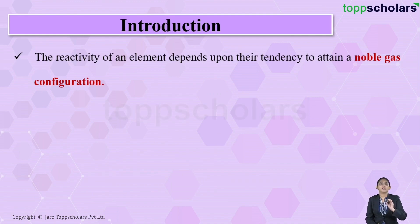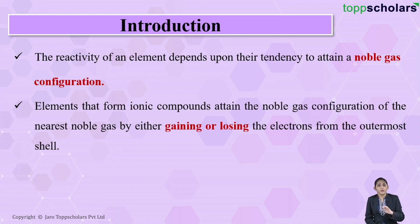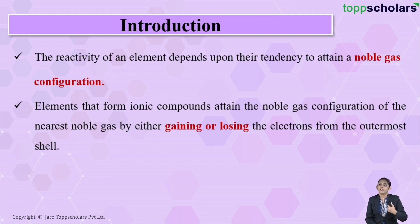The reactivity of any element depends upon its tendency to attain a noble gas configuration. Elements which are unstable want to become stable by attaining the electronic configuration of the nearest noble gas, because for an atom to be stable it should have at least eight electrons in its outermost orbit — a complete octet. So an unstable element either gains or loses electrons from its outermost shell.